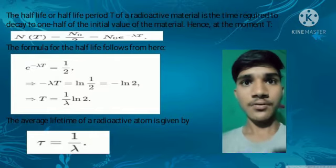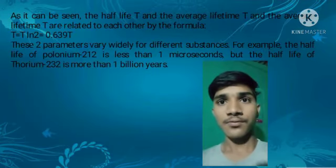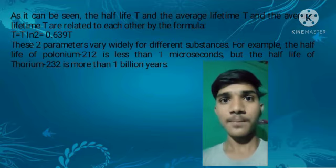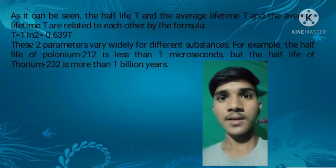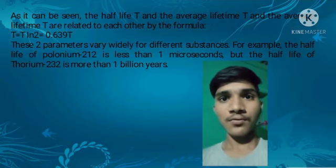The average lifetime of a radioactive atom is given by tau = 1/λ. As it can be seen, the half-life T and the average lifetime tau are related to each other by the formula T = tau × ln(2). These two parameters vary widely for different substances. For example, the half-life of Polonium-212 is less than 1 microsecond, but the half-life of Thorium-232 is more than 1 billion years.